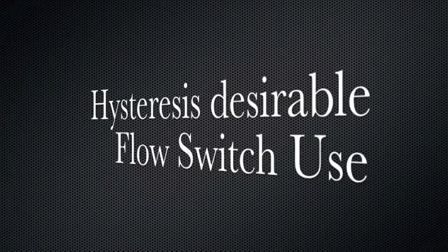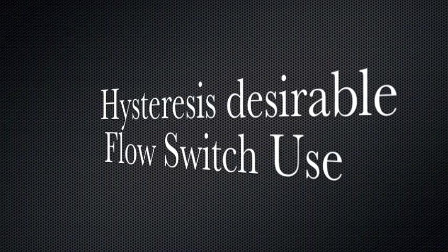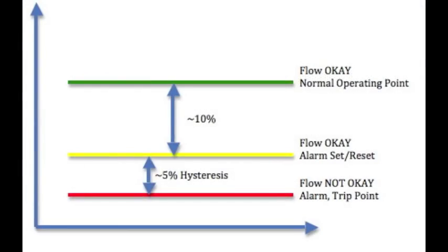Hysteresis is desirable and necessary in a flow switch application. The flow switch alarm should actually be about 10-20% different than the normal operating flow rate. The difference will allow the flow switch to not give a false alarm when the flow rate fluctuates.